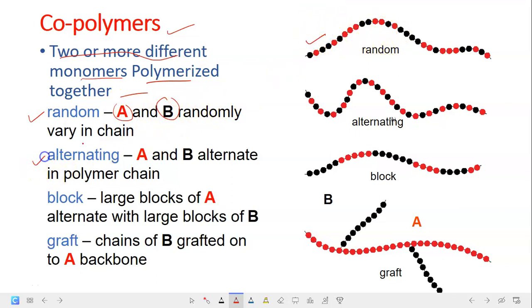And the next one is alternating, shown as here, in which the monomer A and B, they are alternating in the polymer chain. For block, the large blocks of monomer A actually alternates with the large blocks of monomer B. So this is B, this is A, this is B, this is A, and it alternates.